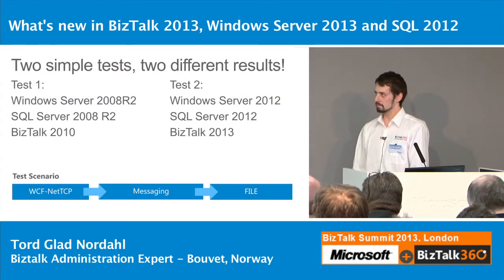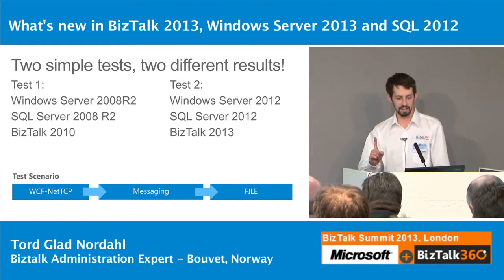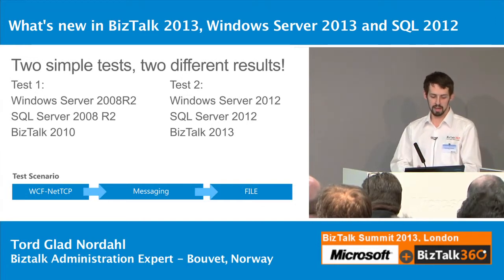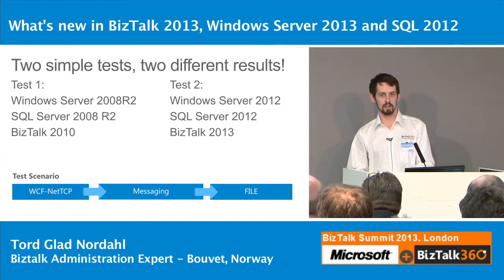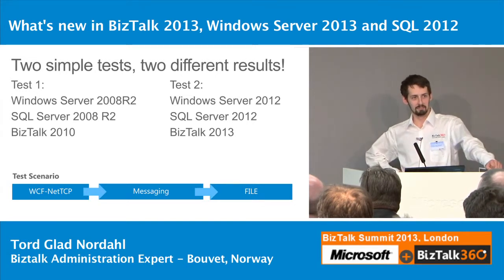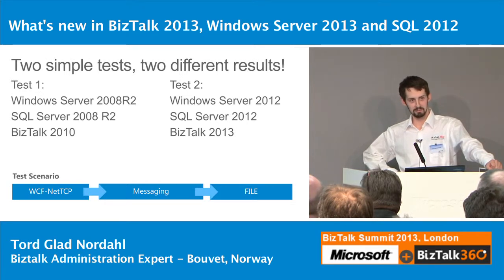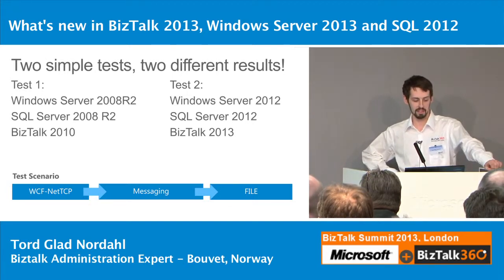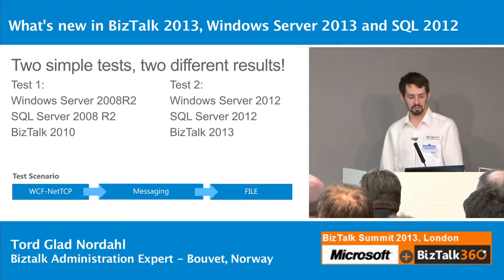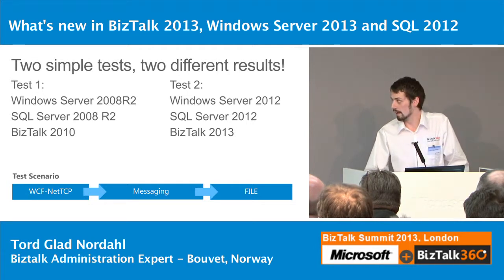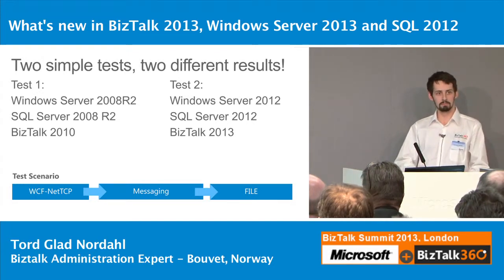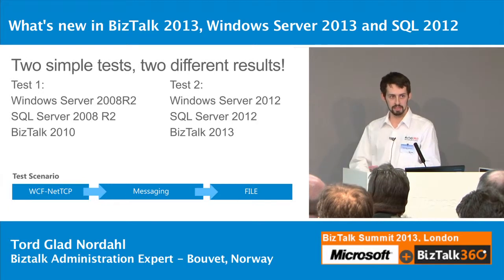I did a small test. I had one machine with 8 gigs of RAM running Windows Server 2008 R2, SQL Server 2008 R2, and BizTalk 2010. It was a very simple test using WCF NetTCP — one of the fastest adapters — as a pass-through to a file share. My first test was with 2010, then I upgraded everything to 2013 on the same machine. I scratched it, upgraded, and these were the results.